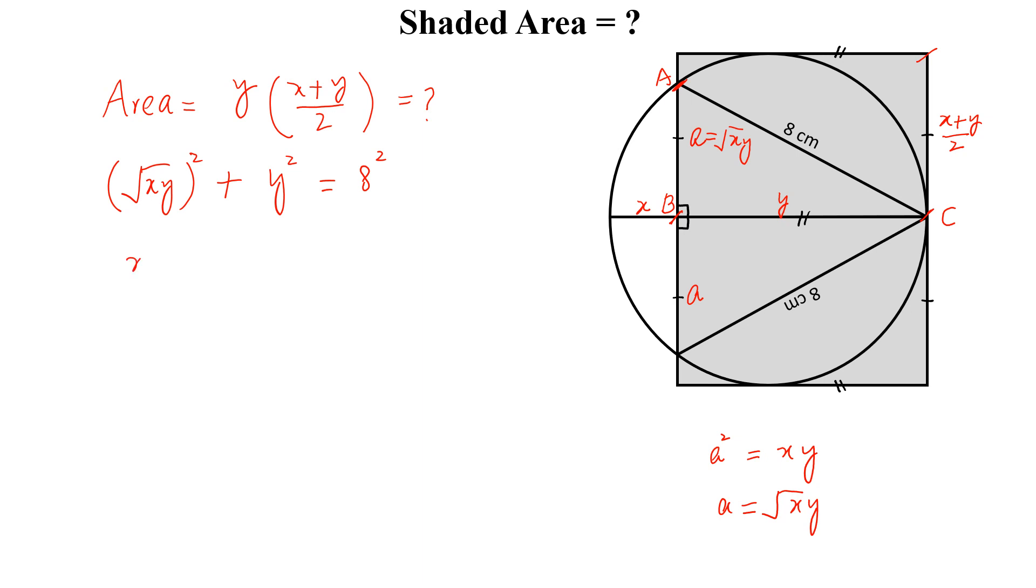Now if we simplify this, so xy plus y square equal to 64, we will take y common, y into x plus y equal to 64, dividing both sides by 2, we will get y into x plus y by 2 equal to 32 centimeter square.